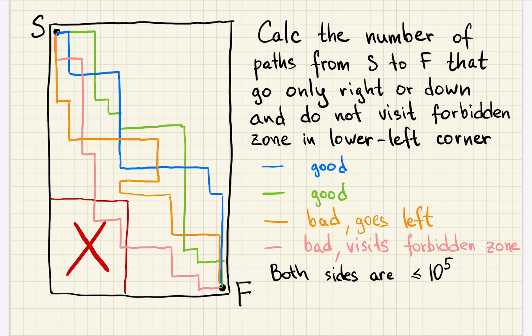Both sides are up to 100,000 and the sides of the forbidden zone are up to the sides of the rectangle, so also big.